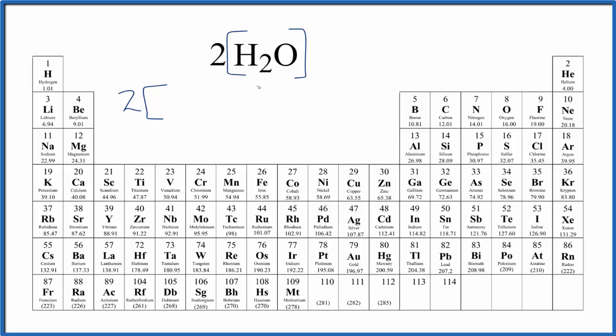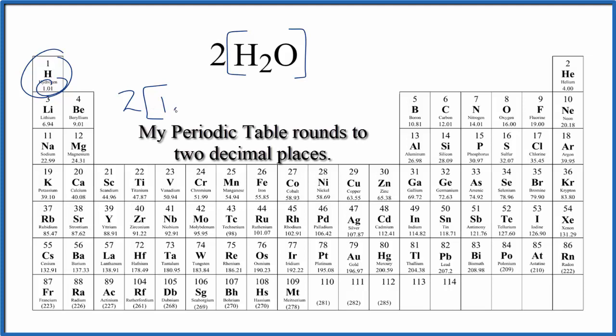We do that by looking at the periodic table. We have hydrogen. Hydrogen right here is 1.01 and the units are grams per mole. Let's write those at the end.